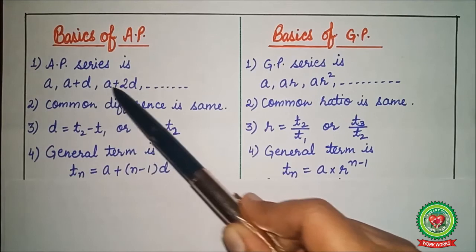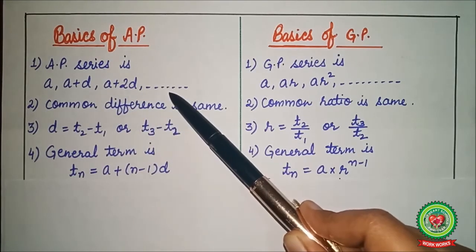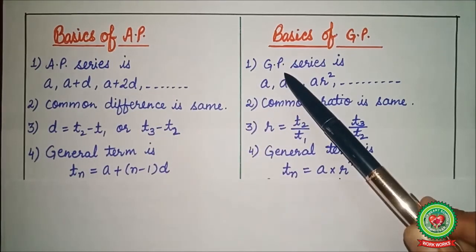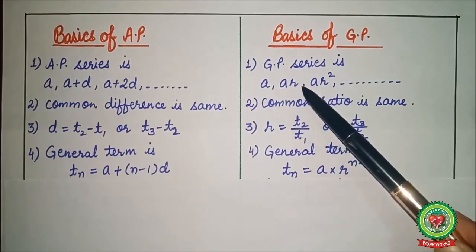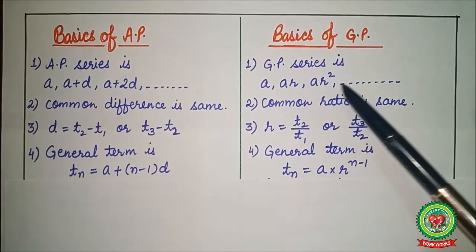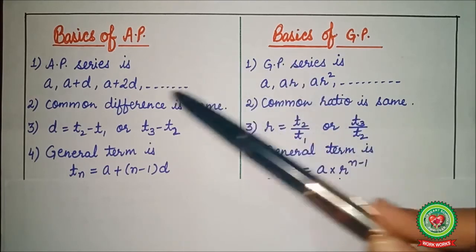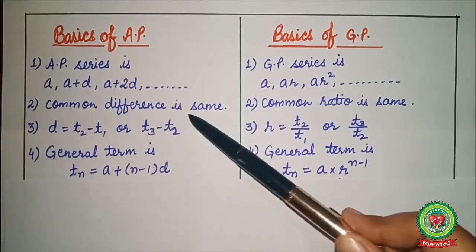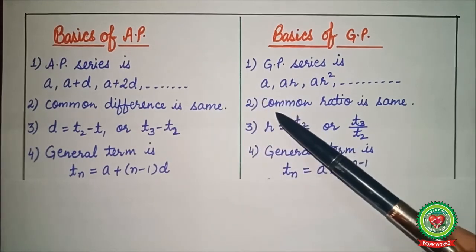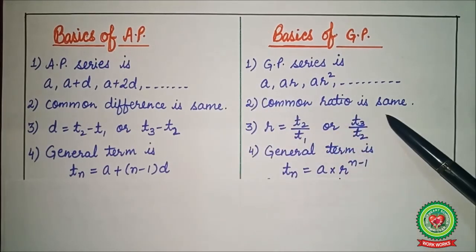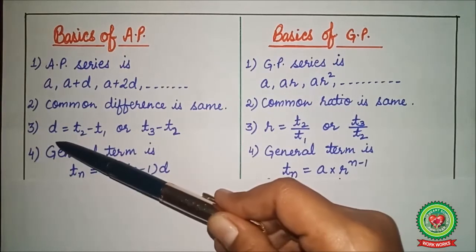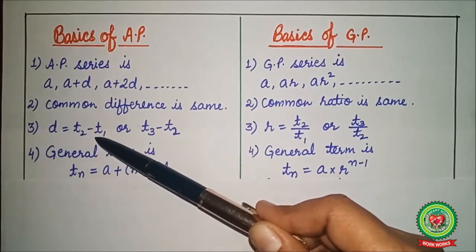As we all know, AP series terms are written as a, a plus d, a plus 2d and so on. In GP series, terms are written as a, ar, ar square and so on. Here terms are in multiplication. In AP common difference is same. In GP common ratio is same.